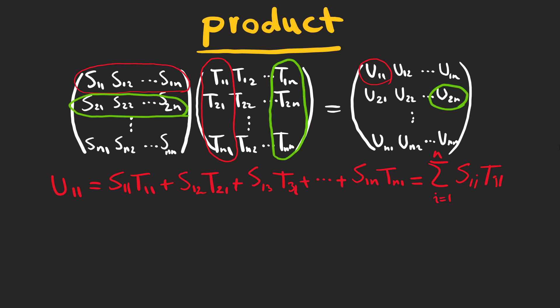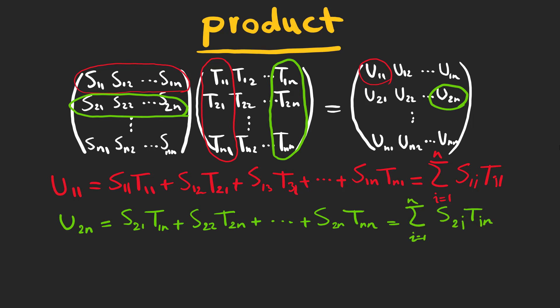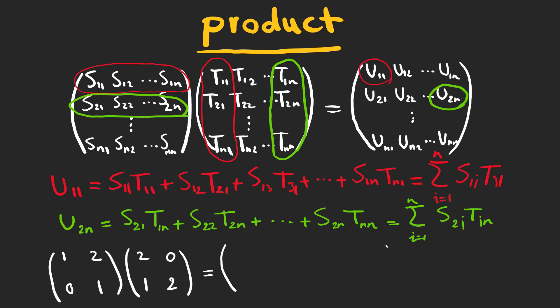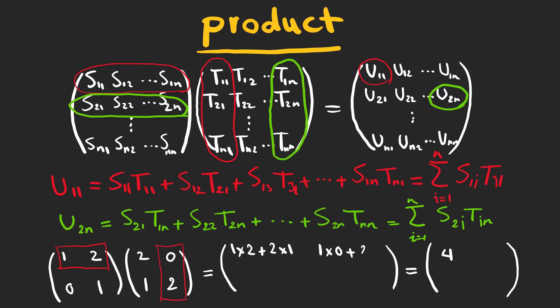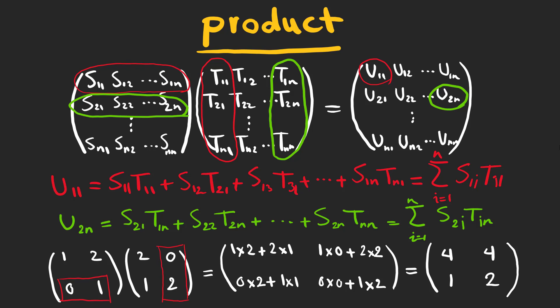For U_2n, we do the same thing by taking the second row of S and the nth column of the second matrix. As an example, take these two matrices. For the first element, we use the first row of the first matrix and the first column of the second, multiply corresponding elements and add, which yields four. For the next element, take the first row and the second column. Then we take the second row and the first column, and finally for the last element, the second row and the second column.